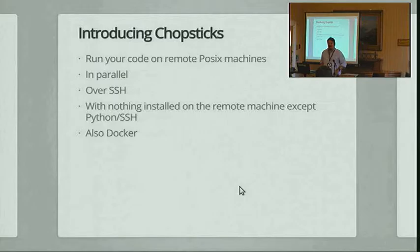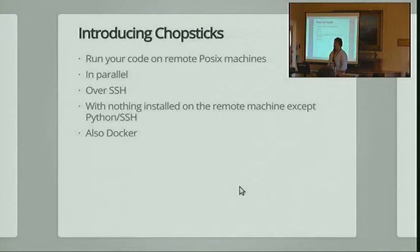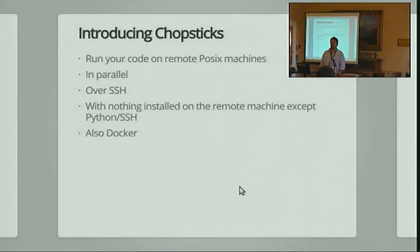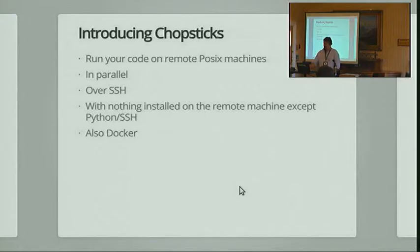Chopsticks, like Ansible and also Fabric, is in this space — it allows you to run code on remote machines over SSH. Chopsticks will do this in parallel and without anything installed on the remote machine, apart from Python and SSH, which is probably going to be pre-installed if you're using any kind of standard image. Chopsticks also has support for Docker, which we'll see.